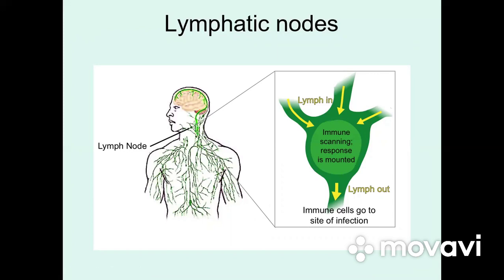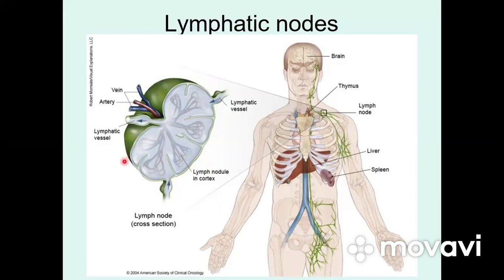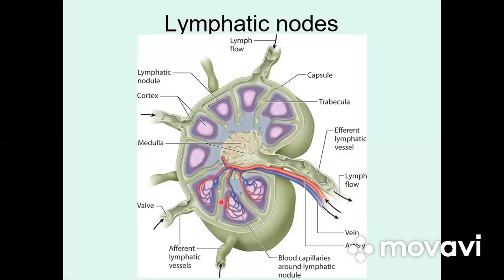Lymphatic nodes are secondary lymphoid organs with a lymphatic capsule. This capsule sends trabeculae inside. The parts of the lymphatic node: the outer part is named the cortex, and the more central part near the hilum of the lymphatic node is named the medulla. From the hilum begin efferent lymphatic vessels which continue to the next lymphatic nodes or to the trunk. The peripheral part — the cortex — consists of lymphatic nodules, and afferent lymphatic vessels begin at the periphery.